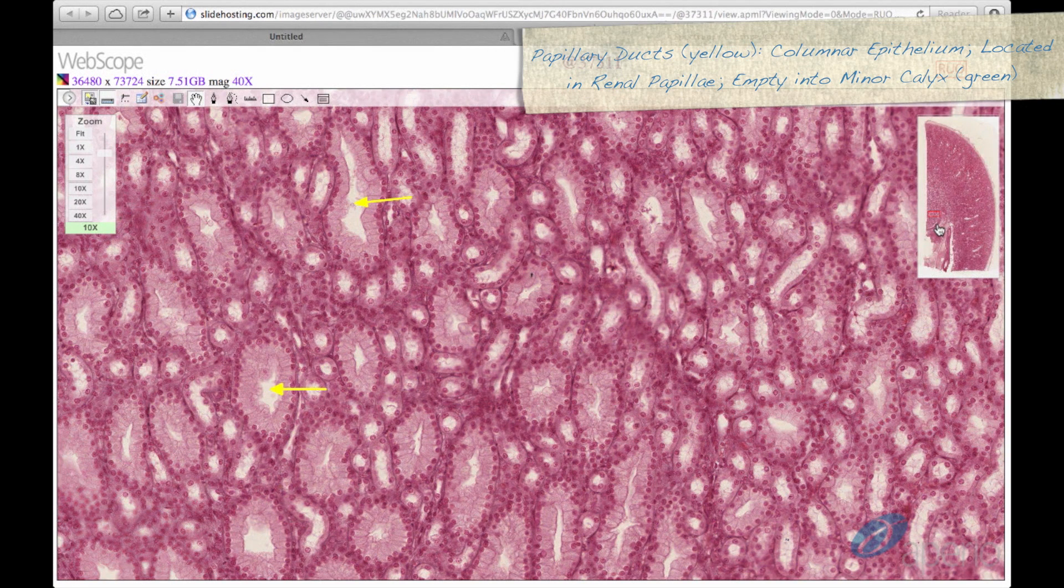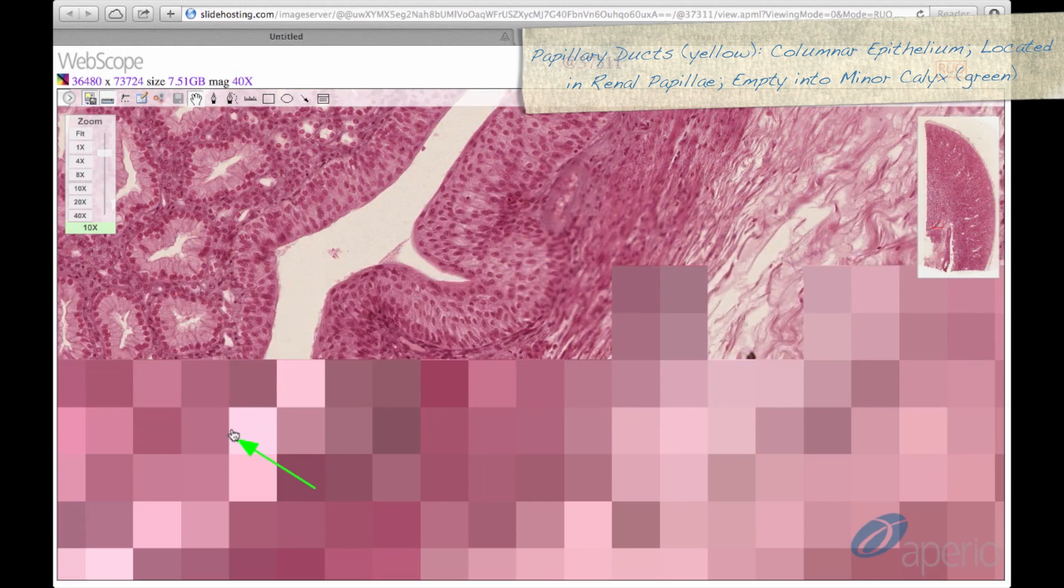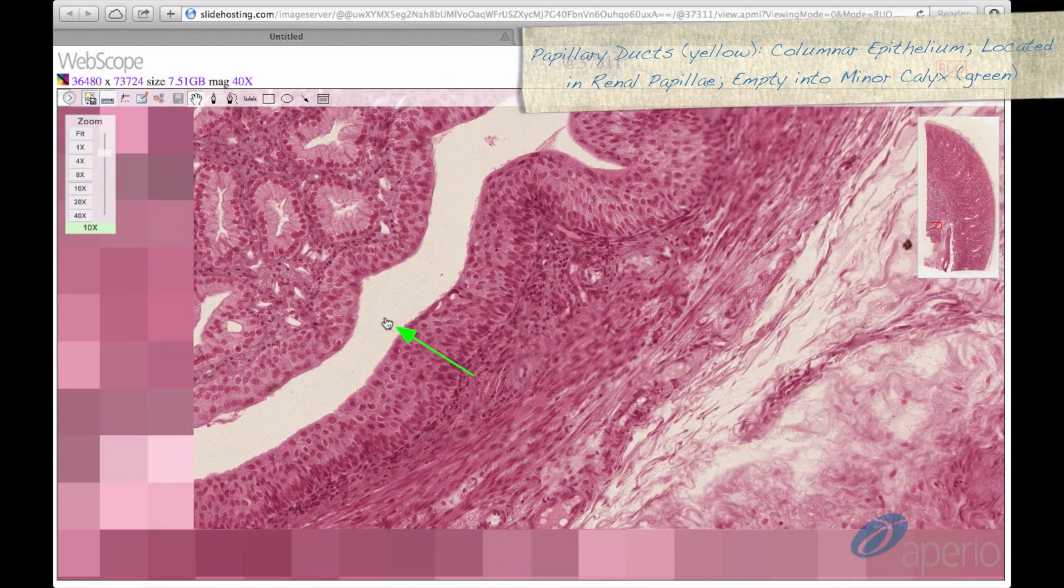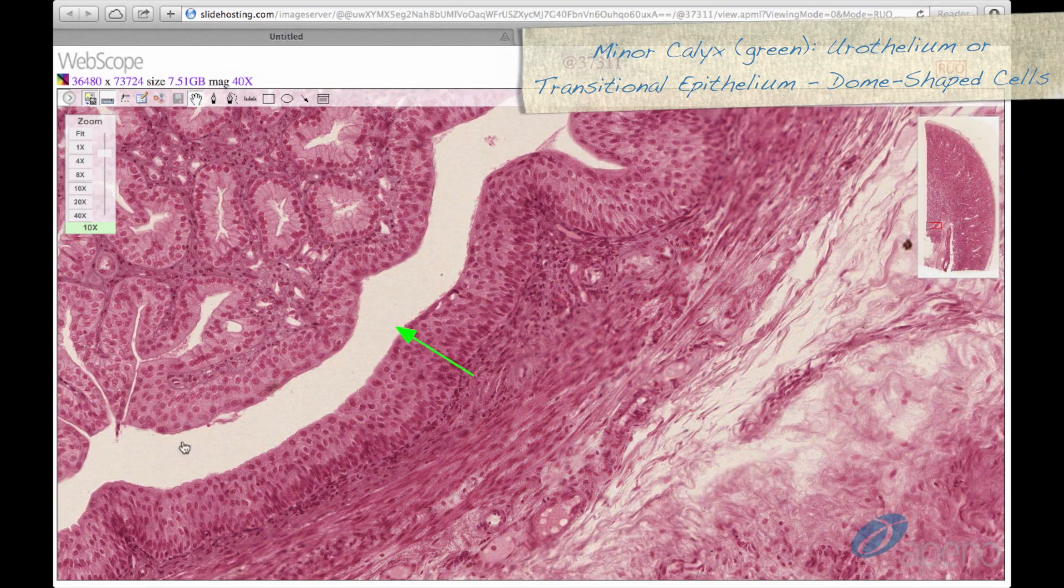The papillary ducts then empty into the minor calyx, seen here at the green arrow. The minor calyx will have urothelium, or transitional epithelium, which have characteristic dome-shaped or umbrella-shaped cells.